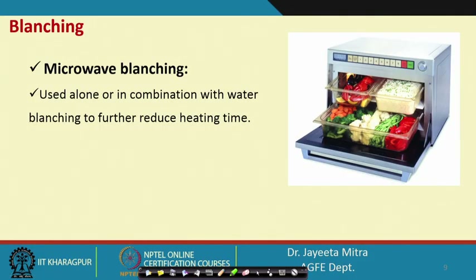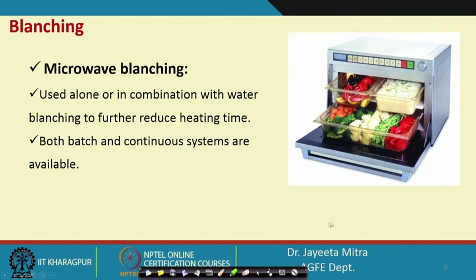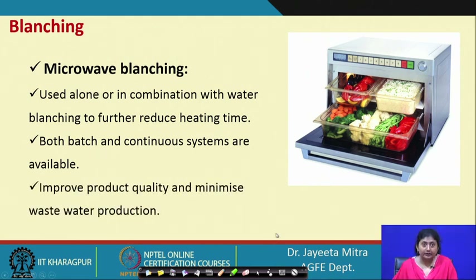Microwave blanching is becoming very effective. It is used alone or in combination with water blanching in household and industrial applications, further reducing heating time. Both batch and continuous systems are available. The principle involves rapid volumetric heating: electromagnetic radiation is absorbed by moisture in the fruits and vegetables, which are high-moisture products. Dipole rotation generates frictional heat, causing volumetric heating and quick processing. Microwave blanching improves product quality and minimizes wastewater production that occurs in hot water blanching.